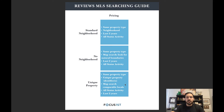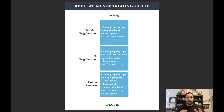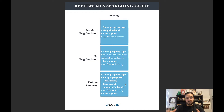In the rarest cases, if you have a very unique property — say it has a view of a specific mountain or is adjacent to a specific river — something very unique to that specific home that you can find spread throughout the city or local area but not within a defined neighborhood, you're going to search by that property identifier.